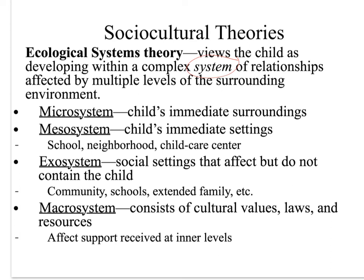The community, the school, the extended family — all seem important in how one develops. When we compare children from wealthy environments with financial freedom to engage in different activities to those from less affluent communities, we can see the differences. Lastly, the macrosystem encapsulates cultural values, laws, and resources. Bronfenbrenner argued that this affects the support given at the inner levels — depending on how laws are passed, this can directly affect our microsystem, providing a comprehensive and collective approach to how we develop in our society.